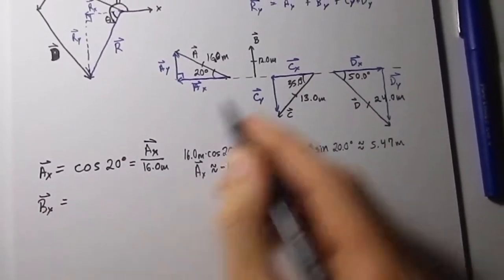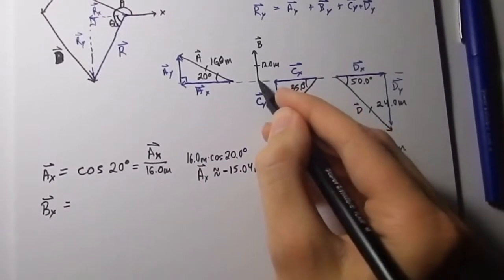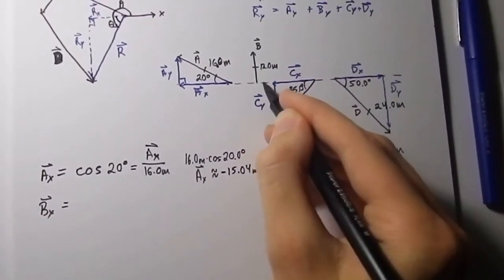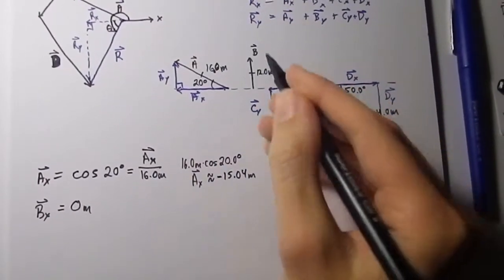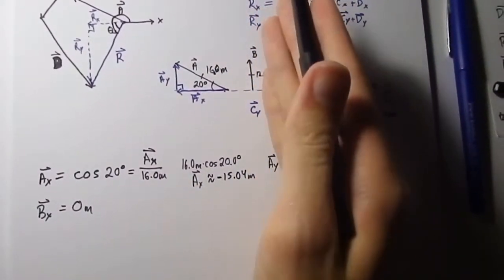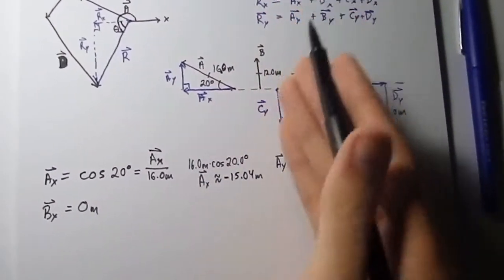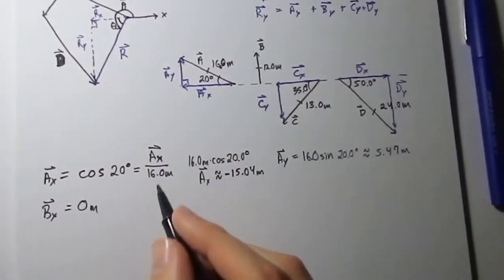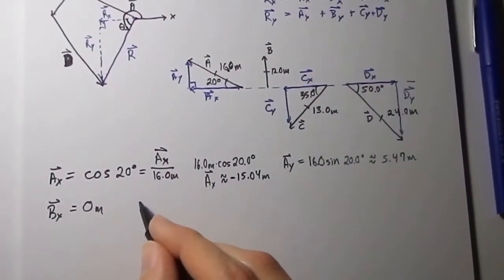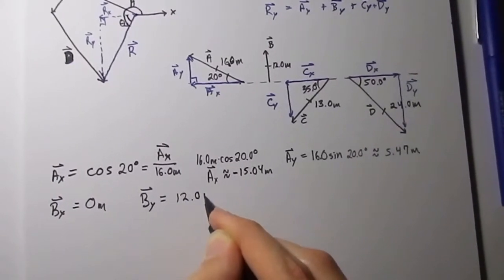I really hope that you understand how I got this. It's basically from here. The x-component of vector B is 0 right here, because it's not going, it's just straight up, not a degree tilted in either way or a fraction of a degree. It's just going to be 0 meters. It's not going anywhere along the x direction. Which would also mean that the y-component of vector B is 12.0 meters.